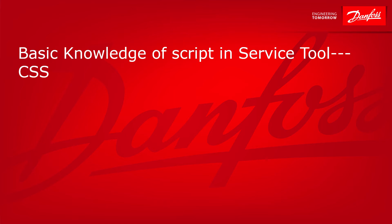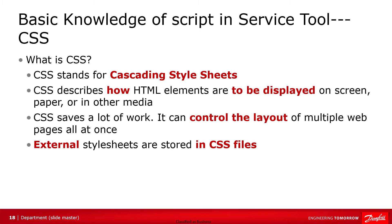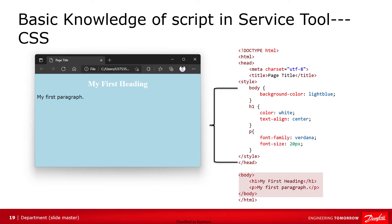Above, we have covered the basic knowledge of HTML. Let's take a look at CSS. CSS stands for cascading style sheet. It determines how to display HTML elements on screens. CSS saves a lot of work because it can control the layout of multiple web pages all at once. It is possible to use an external style sheet with the CSS extension. In this example, we define a heading and a paragraph in the body element. And in the header, we define the style using CSS language. We set the background color of the body element to light blue, set the font color of the heading to white, and text align to center. We set the font of the paragraph to Verdana, and font size to 20 pixels.